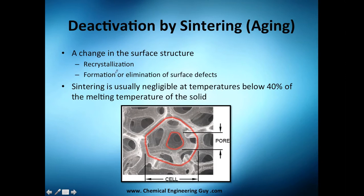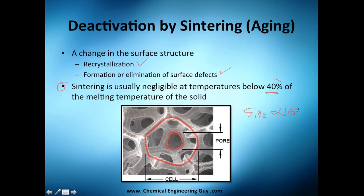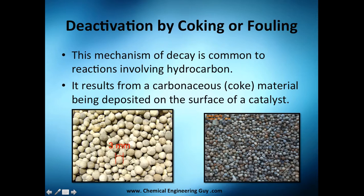This occurs due to crystallization and the formation or elimination of surface defects. A useful rule of thumb: below 40% of the melting temperature of the solid, it is okay to work with that material. So if you have silica with a melting point of, say, 1000°C, working near 1000°C is not good, but working at maybe 300°C is probably a good option.